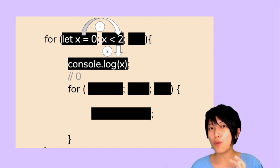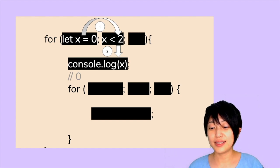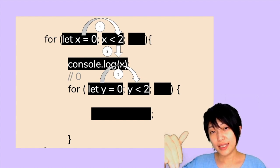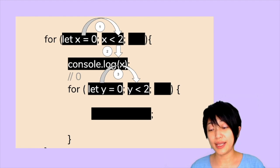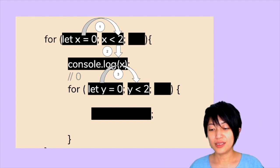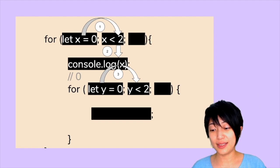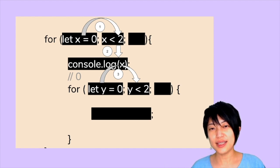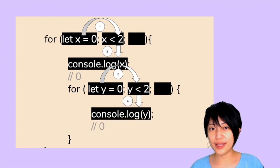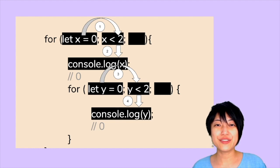However, because we now have another for loop nested inside the bigger for loop, instead of looping back, this outer for loop is going to unravel the inner for loop next. The second for loop gets executed: let y gets declared and tested against y smaller than 2. At this stage y is smaller than 2, so console.log prints y as 0.